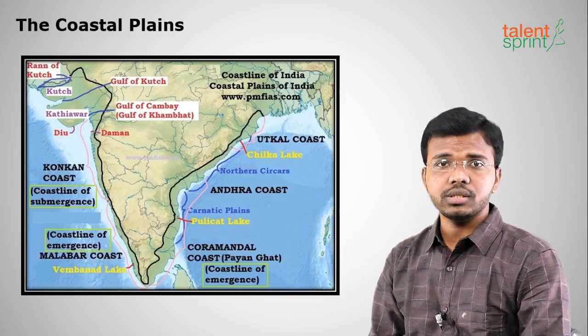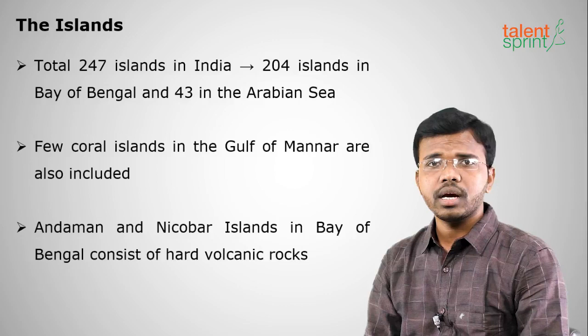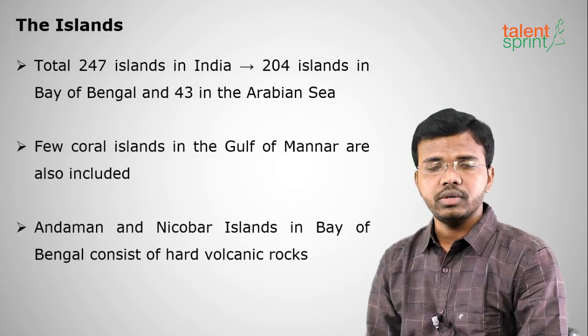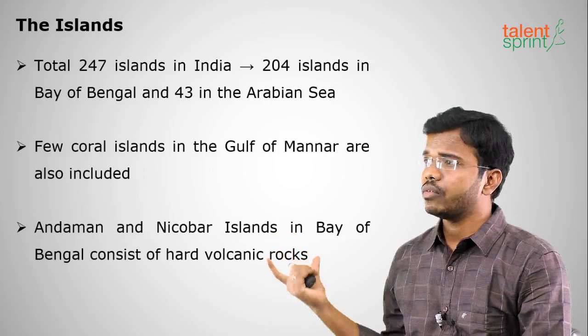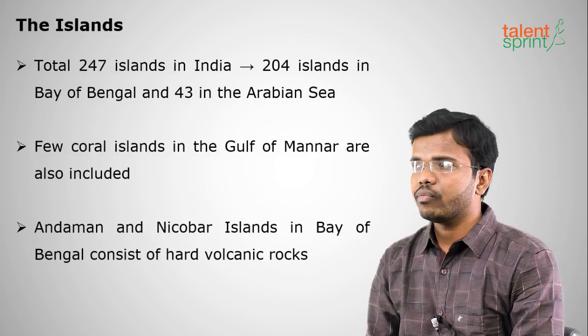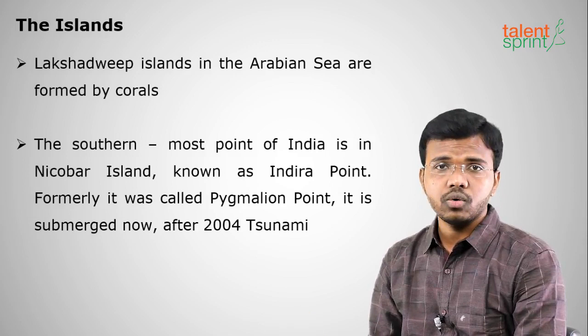Islands are land masses surrounded by water on all four sides. India has two main island groups: the Andaman and Nicobar Islands and the Lakshadweep Islands. Totally, India has 247 islands — about 204 in the Bay of Bengal, around 40 in the Arabian Sea, and a few coral islands in the Gulf of Mannar at the India-Sri Lanka border. Andaman and Nicobar Islands consist of hard volcanic rocks, while Lakshadweep Islands are formed by corals.